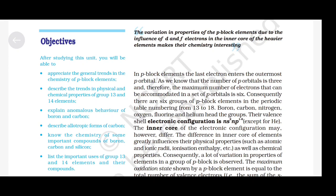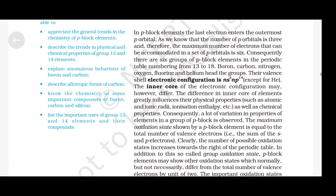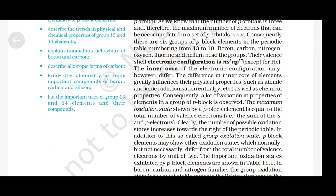There are 6 groups of P-Block Elements in the periodic table, numbering from 13 to 18. Boron, Carbon, Nitrogen, Oxygen, Fluorine, and Helium head the groups. Their valence shell electronic configuration is NS²-NP¹⁻⁶ except for Helium. The inner core of the electronic configuration may however differ. The difference in inner core greatly influences physical properties such as atomic and ionic radii, ionization enthalpy, as well as chemical properties.